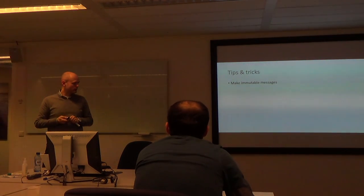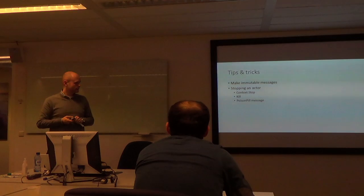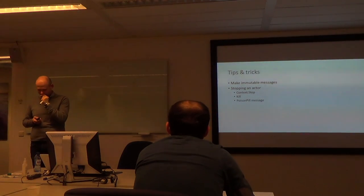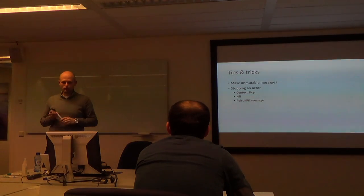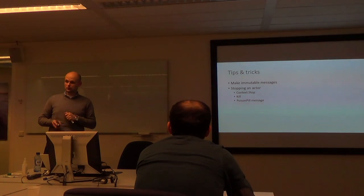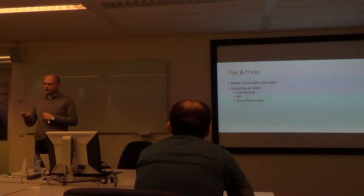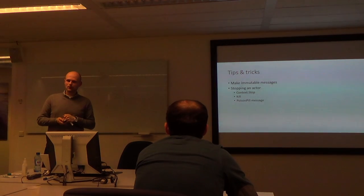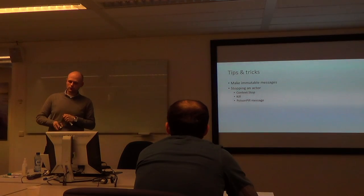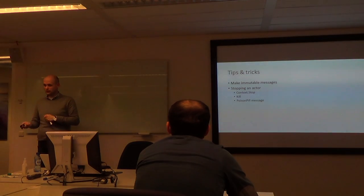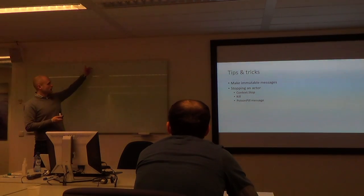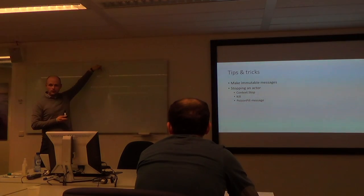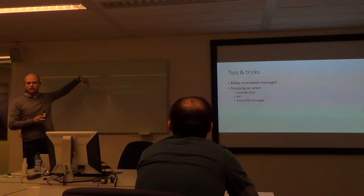Tips and tricks: always use immutable messages. Stopping an actor is also a pitfall — there are three ways. Context.stop: the actor is stopped after it completes the current message. Kill: the actor is stopped after the current message but an exception is thrown. And the poison pill: a message sent to the actor that is placed at the end of the mailbox, so it first handles all current messages, then the actor is killed.